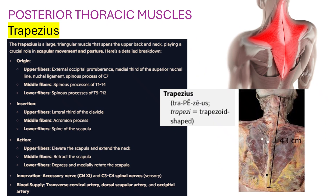Now, posterior thoracic muscles. The first is the Trapezius muscle — trapezoid-shaped, as you can see. Trapezius is a large triangular muscle that spans the upper back and neck, playing a crucial role in scapular movement and posture.